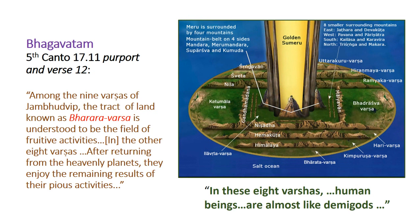Another evidence of this: Bhagavatam Fifth Canto, 17.11 purport and verse 12 reads — among the nine Varshas of Jambodvipa, the tract known as Bharat Varsh is understood to be the field of fruitive activities. In the other eight Varshas, after returning from the heavenly planets, they enjoy the remaining results of their pious activities. In these eight Varshas, human beings are almost like demigods.